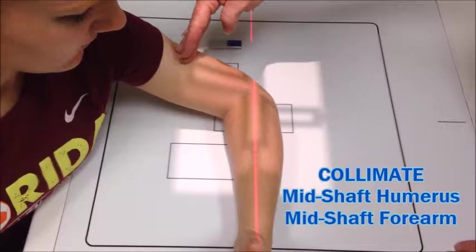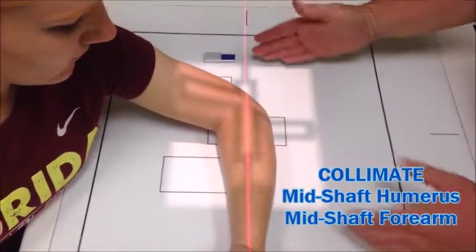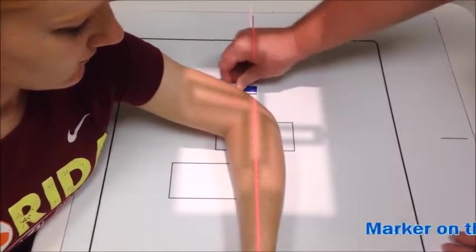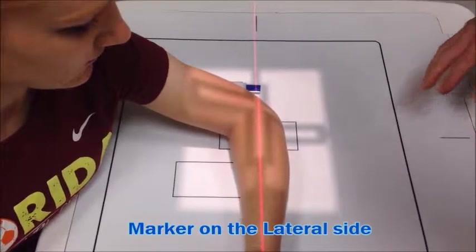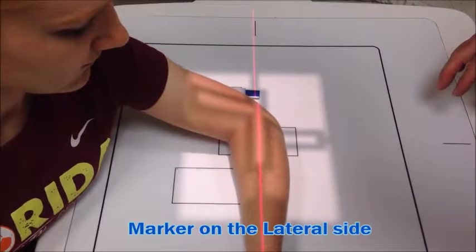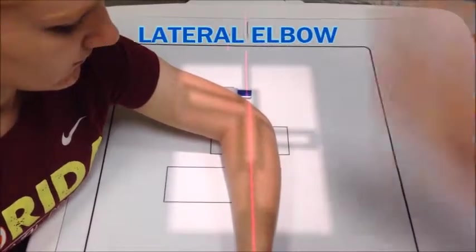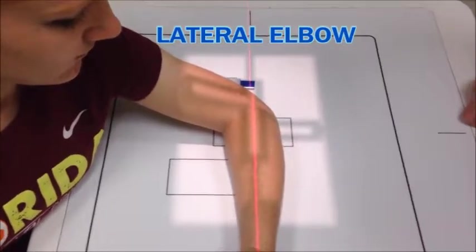Collimate down to the mid-shaft of the humerus. Mark again on the lateral side. Make sure that you have mid-shaft of the forearm and this is your lateral view.